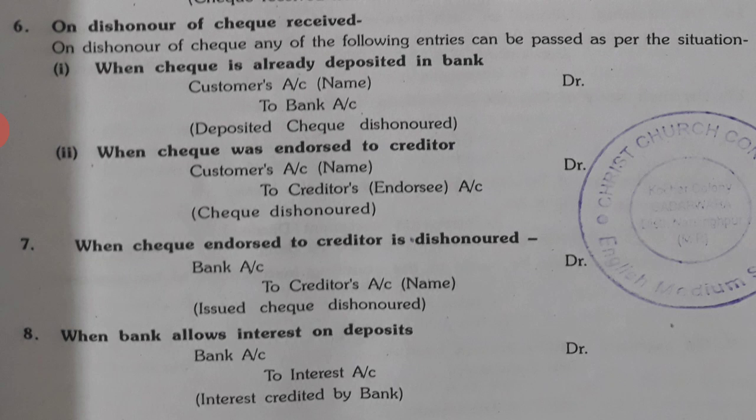Seventh entry: when a check endorsed to a creditor is dishonored, bank account is debited and creditor's name is credited. Eighth entry: if the bank has given you interest on your deposited money, your bank account increases, so bank account is debited. Interest is a gain, and all gains, profits and revenues are credited, therefore to interest account.